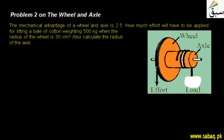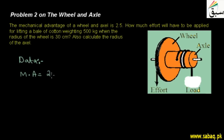Students, we have the statement from which we collect the data — what is given and what is unknown, which we will find out. First of all, we have the mechanical advantage. In this case, the machine is a wheel and axle.